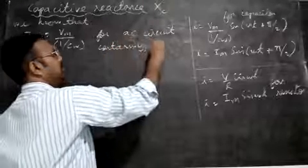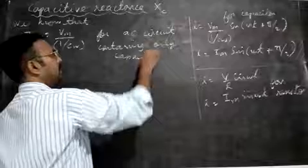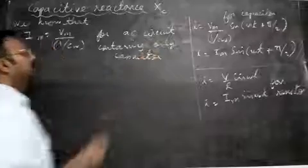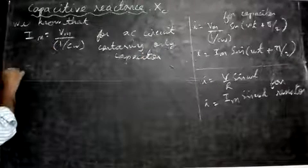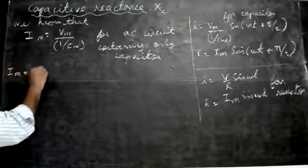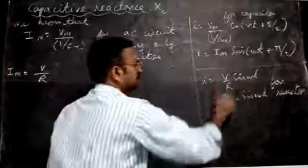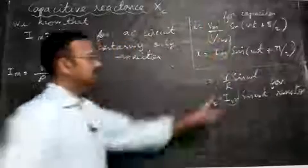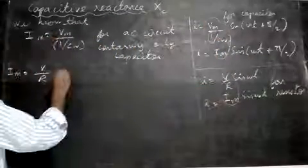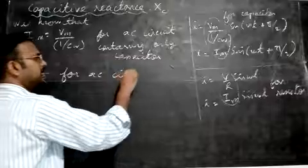Similarly, Im = Vm / R for an AC circuit containing only a resistor.